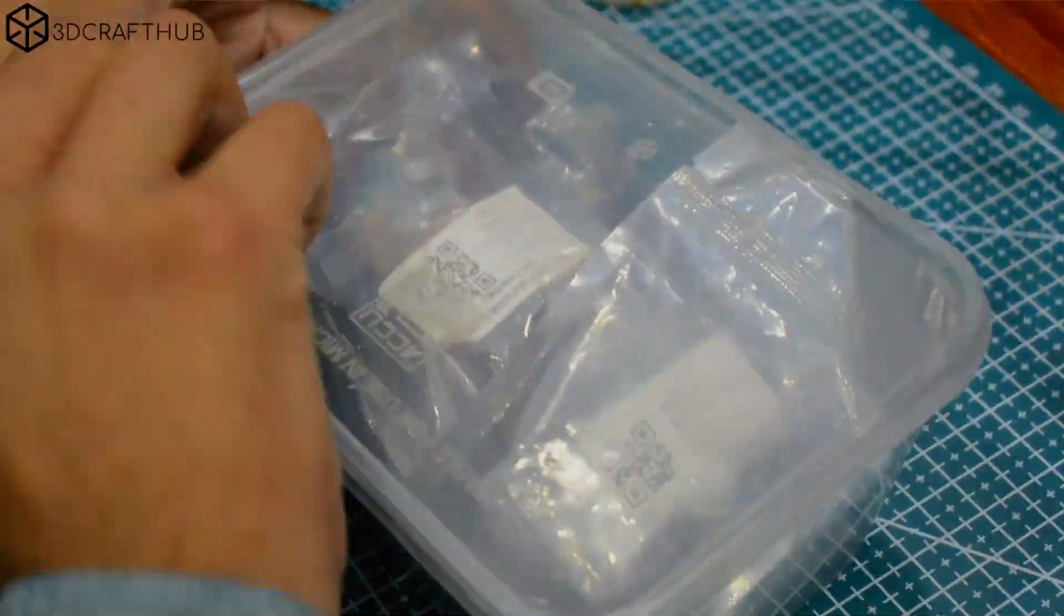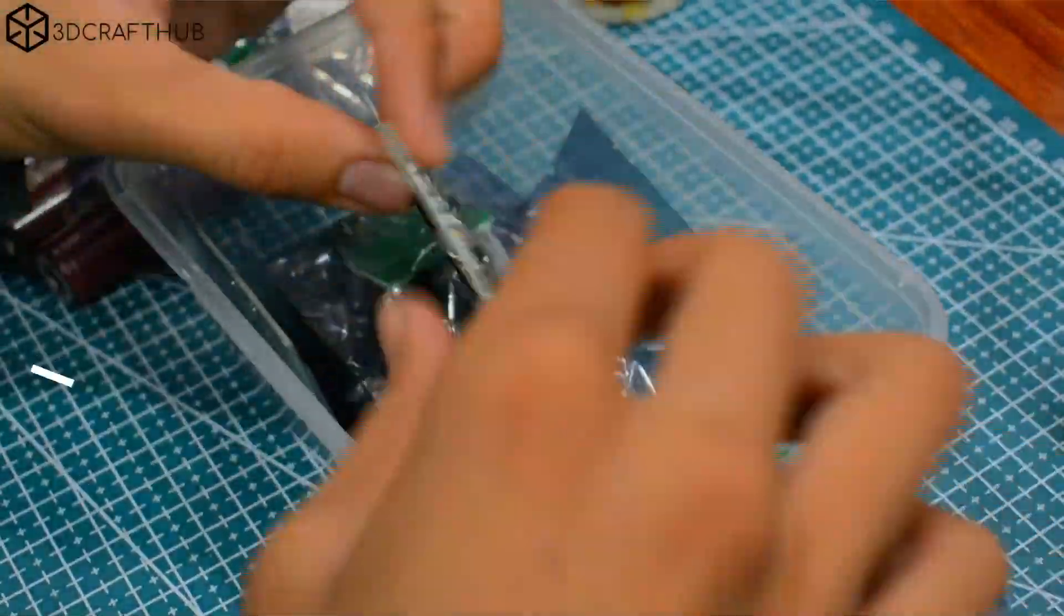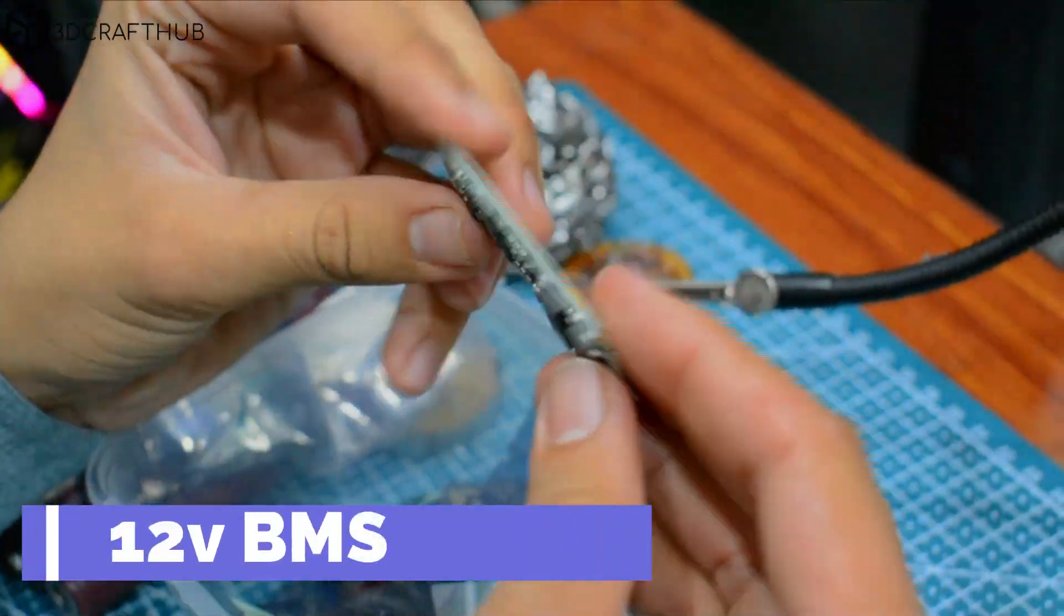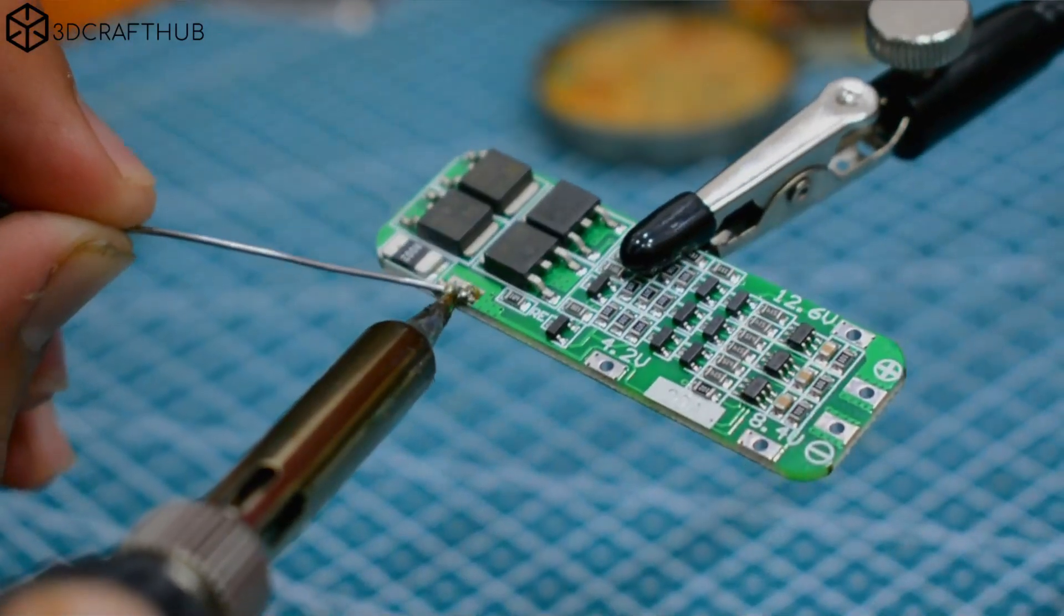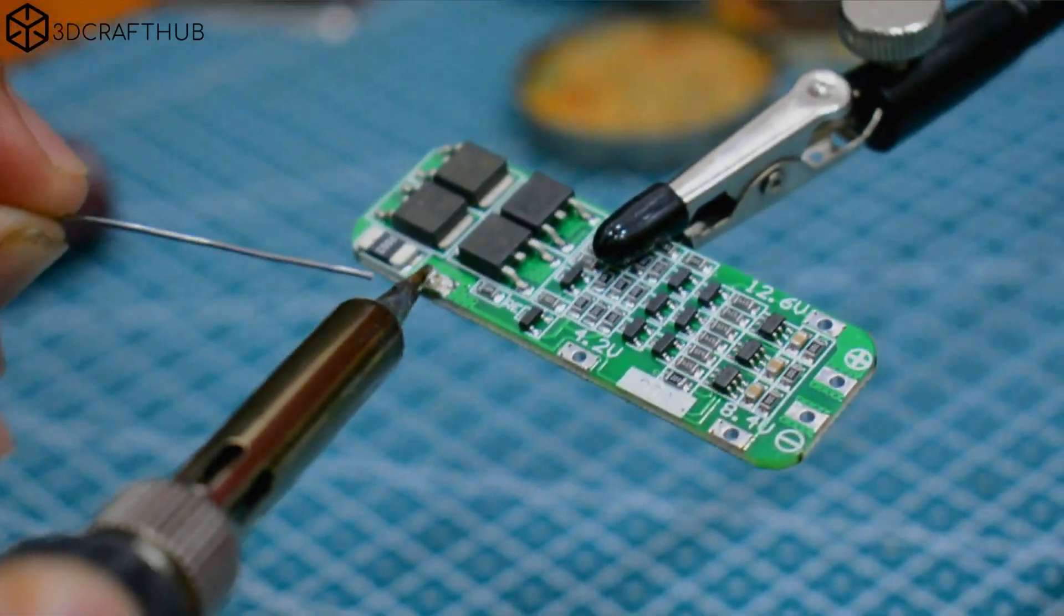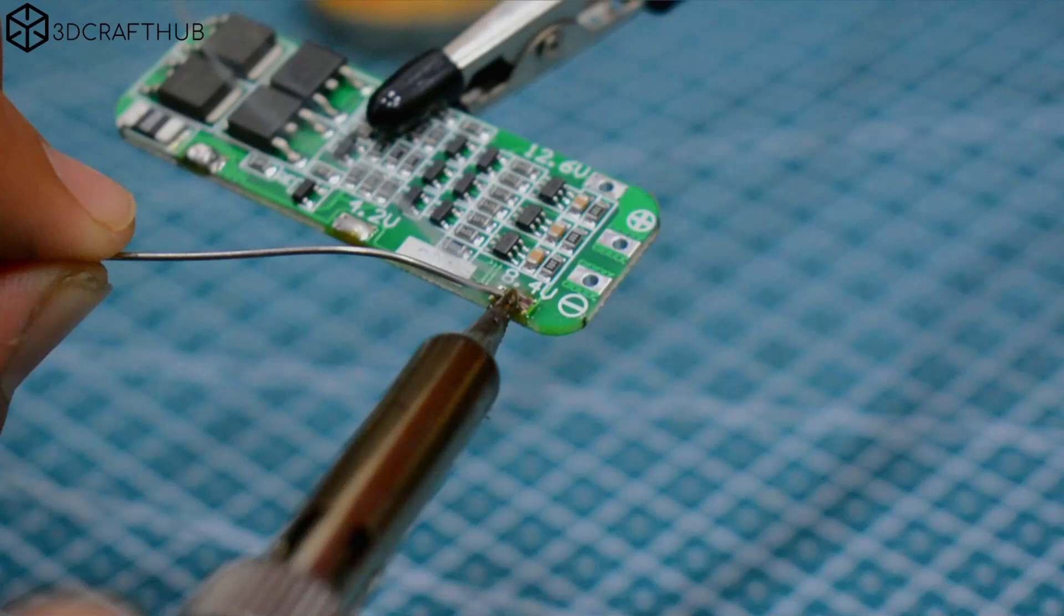Now for the brains of the operation. This little green board is the BMS, the bodyguard for our batteries. It keeps them safe, happy, and living their best life. We'll carefully solder all the connections.